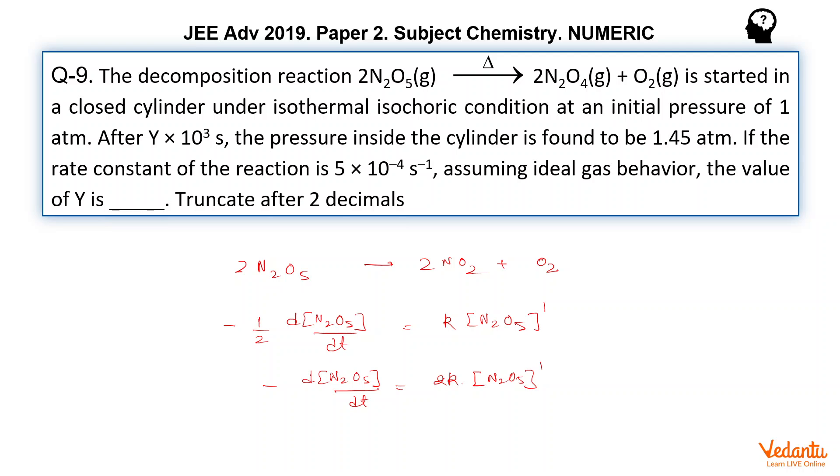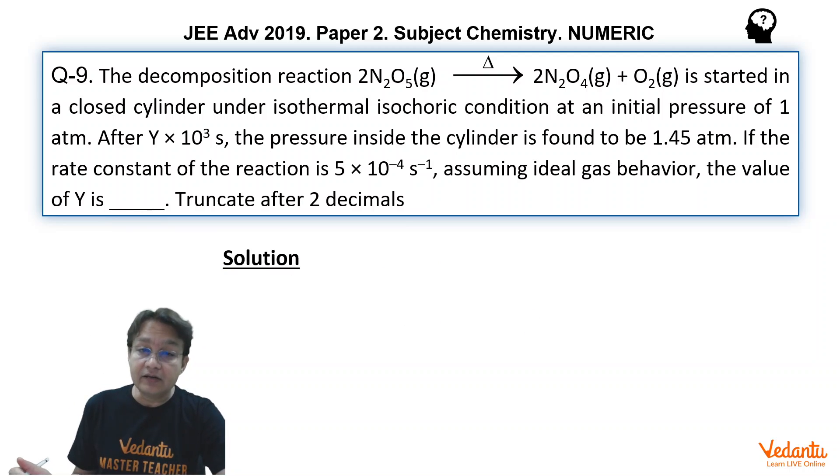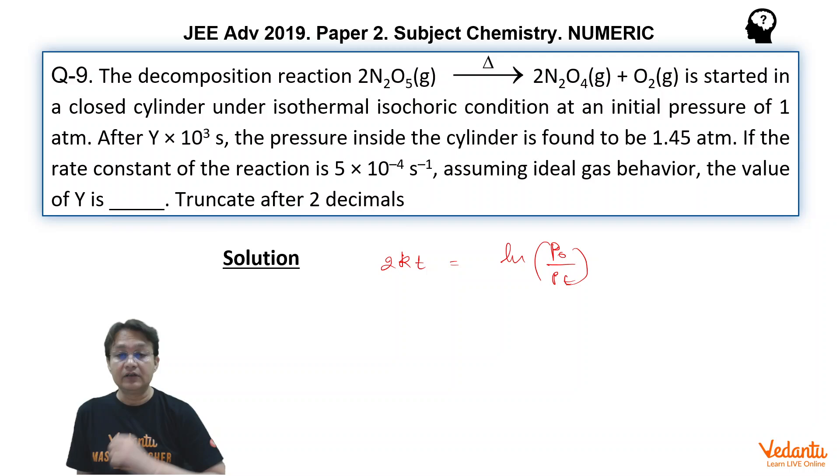The purpose of solving this equation in such a manner is to give you this important fact that when you write the integrated expression for this, the expression looks like this: 2kt equals ln(P₀/Pt). It will look like this. So we have to find the initial pressure and the final pressure Pt after time t.